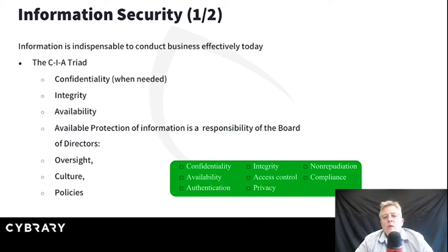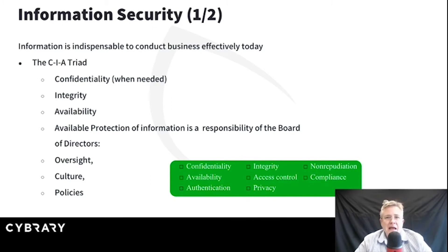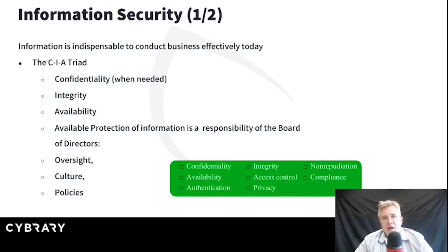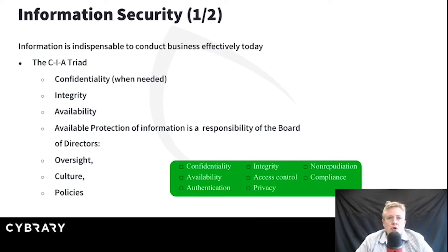Integrity means we want assurance that there's been no modification. I want to know that what I'm downloading hasn't been corrupted, and also hasn't been maliciously modified. My audit files — I want to know no attacker has gone back and changed my audit logs. I want an assurance against modification. Availability means I want timely access to resources — the appropriate people have access to resources when they need them. Any definition of information security should certainly reference the CIA triad, but there's a lot more than just that.